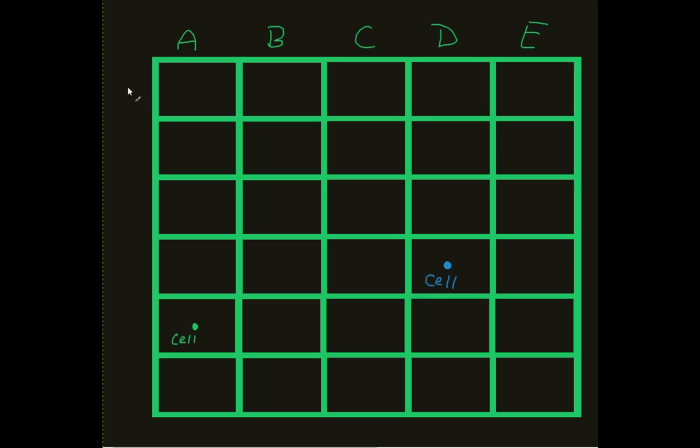Now every one of my horizontal sections, they're given a row number, one, two, three, four, five, and six.